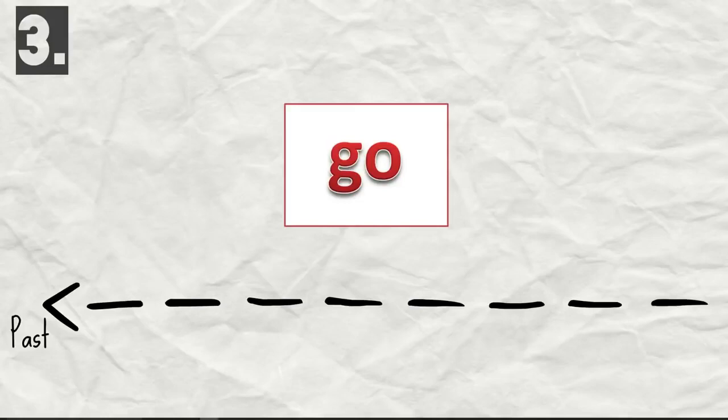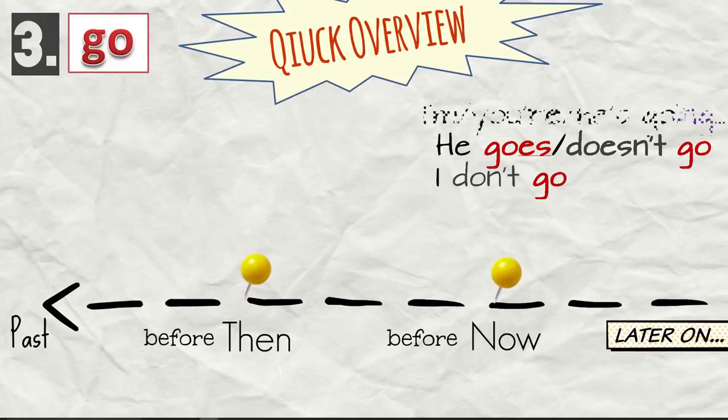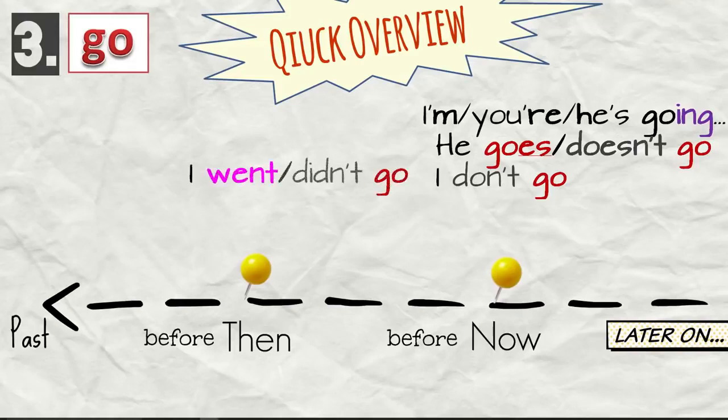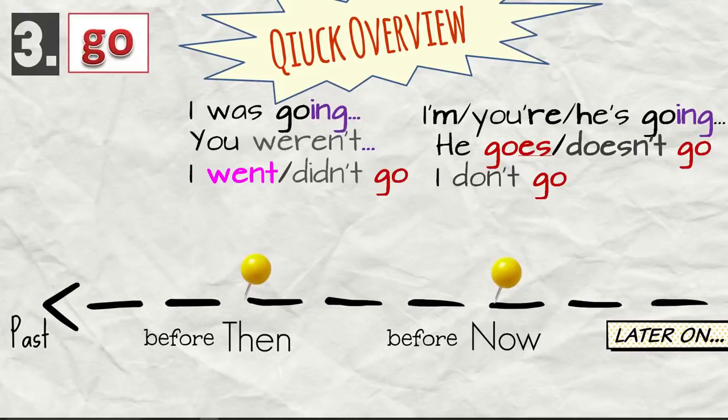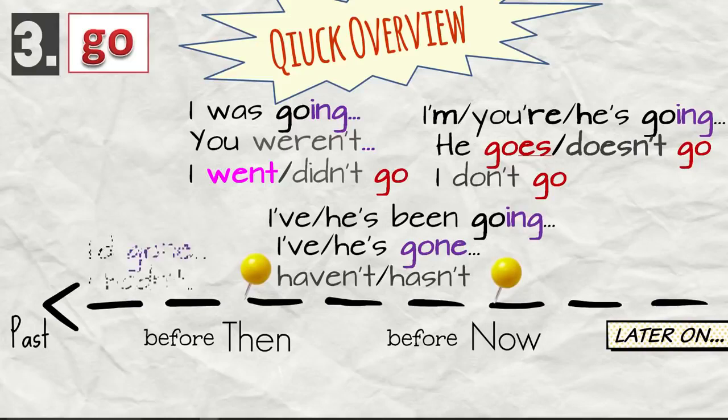Go. Quick overview. He goes. I go. Or he doesn't go. I don't go. I'm going. You're going. He's going. I went or I didn't go. I was going. You were going or you weren't going. I've gone. He's gone. I've been going. He's been going. I'd gone. I'd been going.